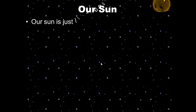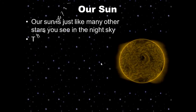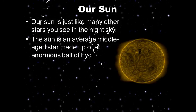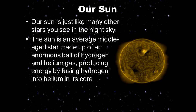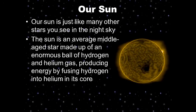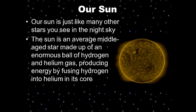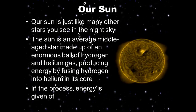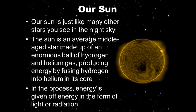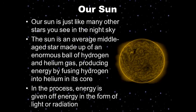Our Sun is just like many other stars you see in the night sky. The Sun is an average, middle-aged star made up of an enormous ball of hydrogen and helium gas, or plasma — a really hot gas — producing energy by fusing hydrogen, the lightest element in our universe, into helium in the core. In this process, energy is given off in the form of light or radiation.